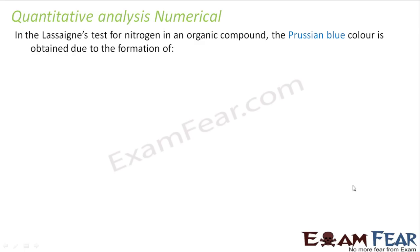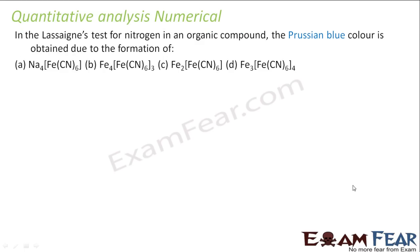In the Lassaigne's test, the Prussian blue color is formed due to the reaction of sodium cyanide (from the fusion extract) with iron sulfate followed by acidification with sulfuric acid.